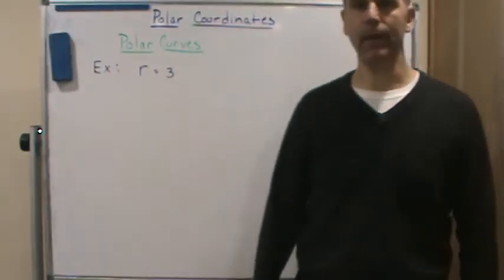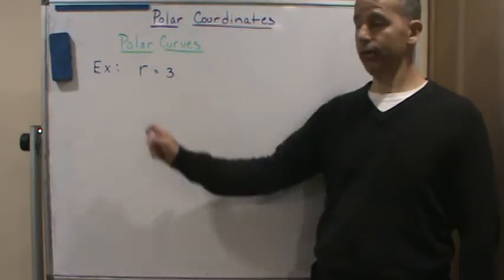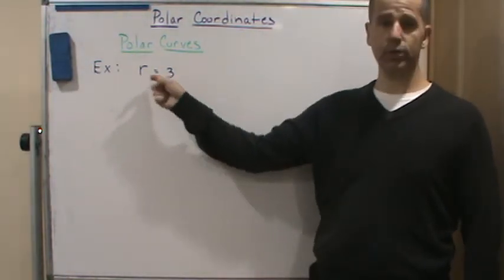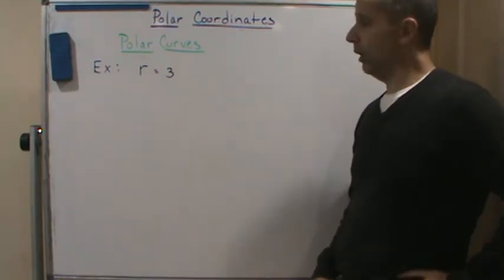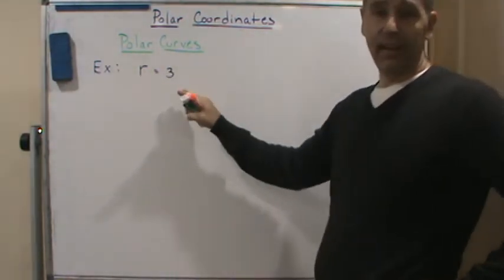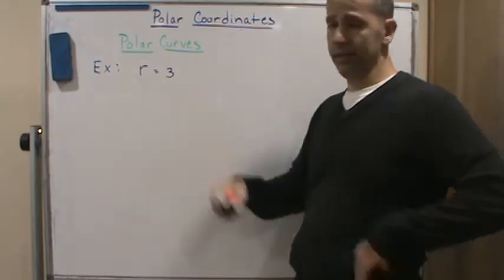Okay, welcome back. Now we've got another equation in polar notation: r equals 3. Let's think about this. We don't see theta in here, so this is independent of theta.